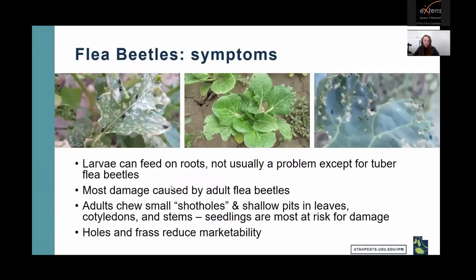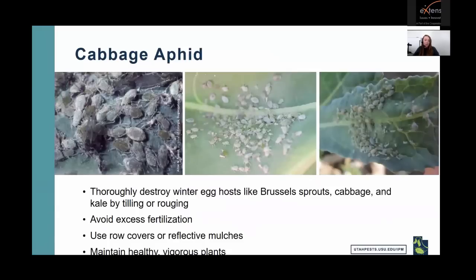Flea beetle symptoms include shot-hole feeding in leaves, or shallow pits causing tan coloring. They feed on cotyledons and stems as well. Seedlings are at most risk for damage. Larvae feed on roots, which is usually not a problem unless dealing with tuber flea beetles, which can be a problem in potatoes. They also leave frass behind — those dark dots visible in affected plants — and the holes plus frass reduce marketability of crops.